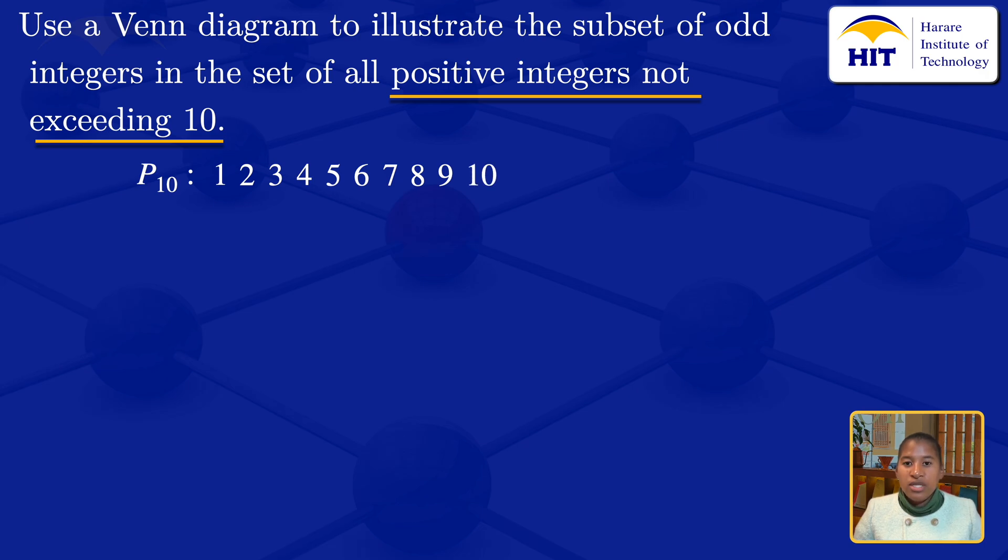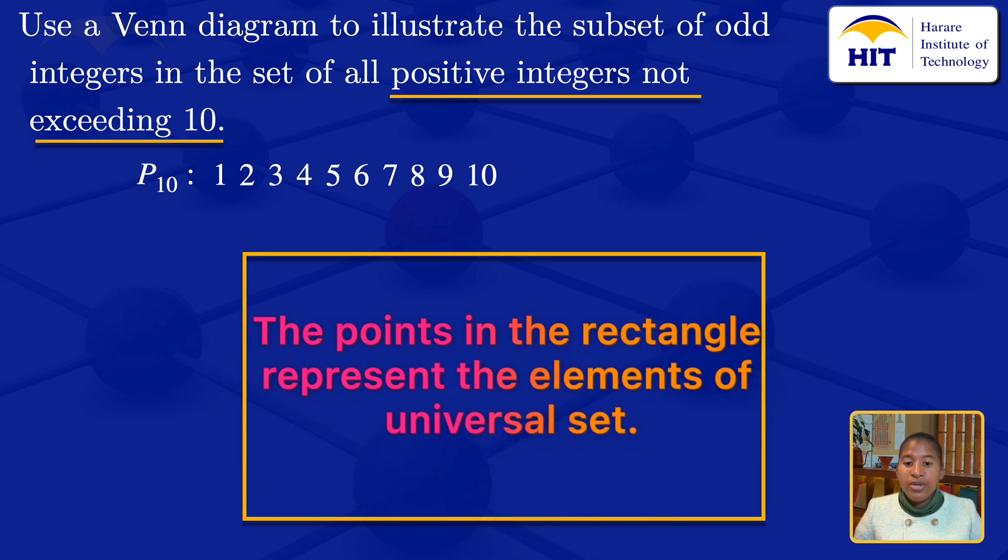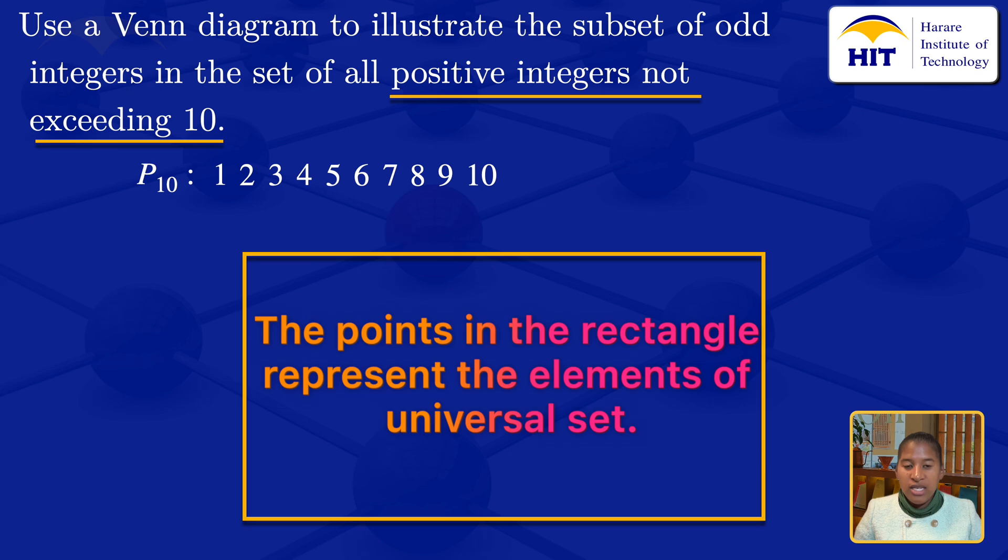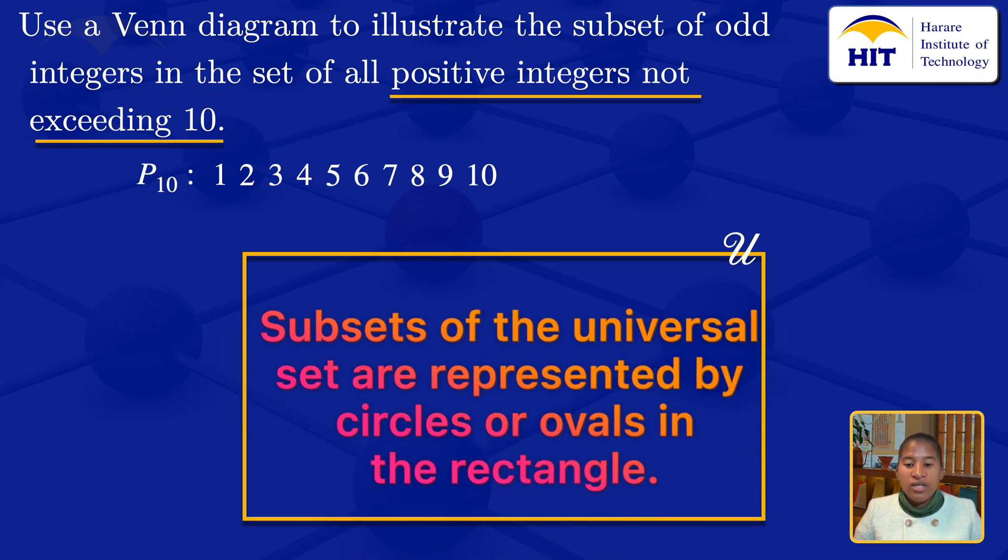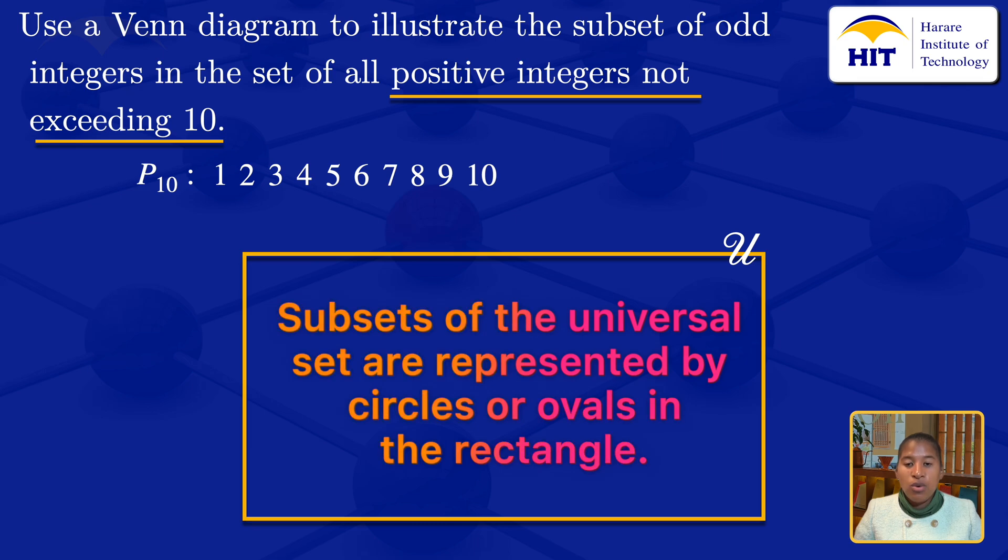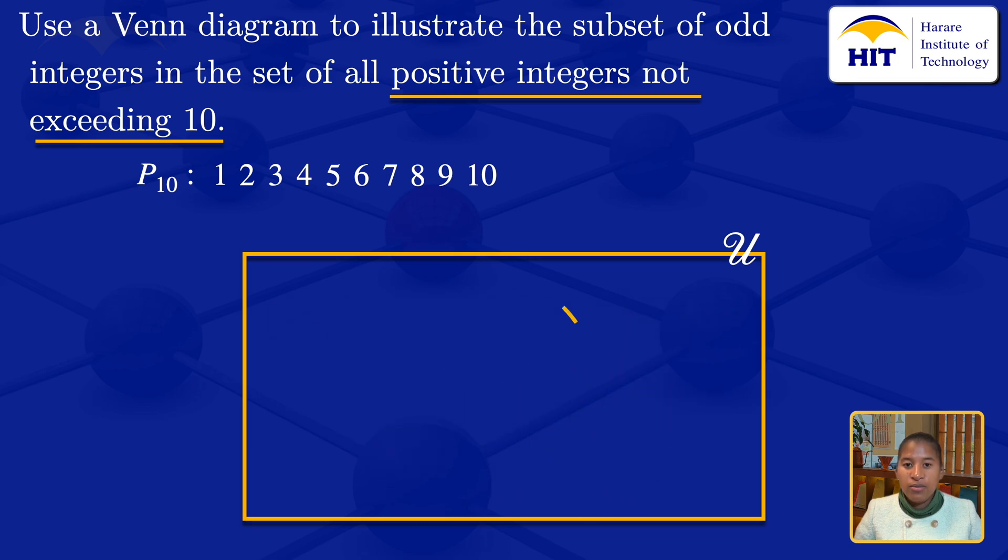To draw the Venn diagram, I will start with a rectangle. Let the points in the rectangle represent the elements of a universal set, which I will denote by this U. Subsets of the universal set are represented by circles or ovals in the rectangle.